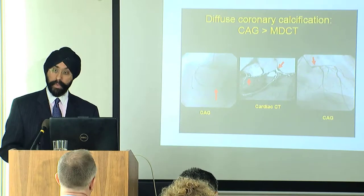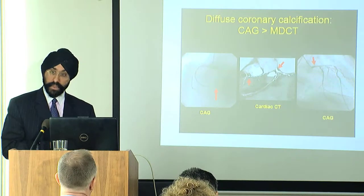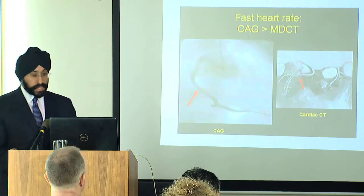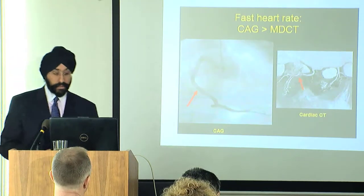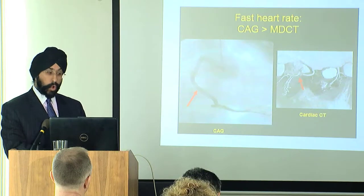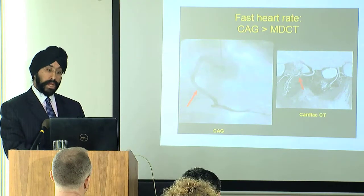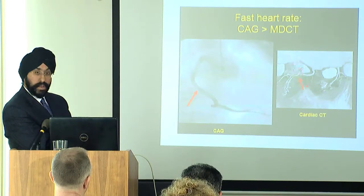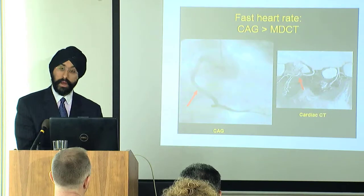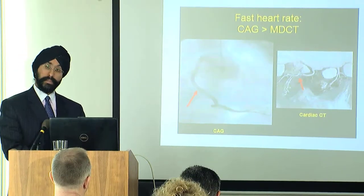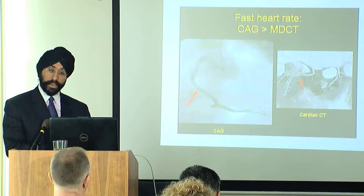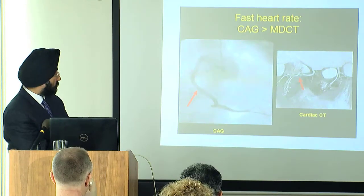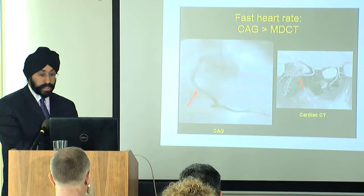Another limitation of CT coronary angiogram is patients with a fast heart rate or uncontrolled arrhythmias — that can be a problem because we just get artifact and it's impossible to see what the vessels look like. As part of our protocol, we try to make sure the heart rate is well controlled and we do give beta blockers. If you have a patient whose heart rate is uncontrolled, then an invasive coronary angiogram may be better to look at the lumen.